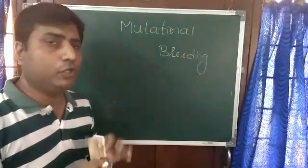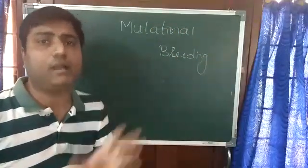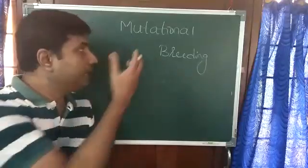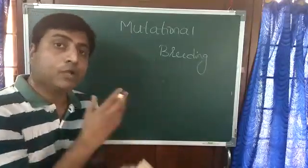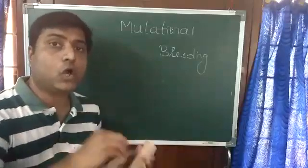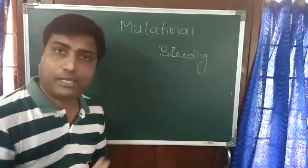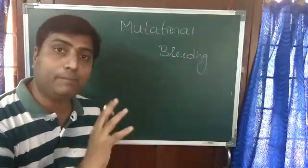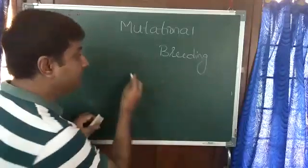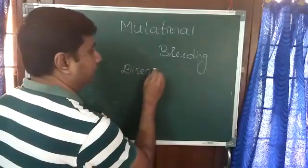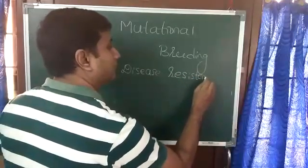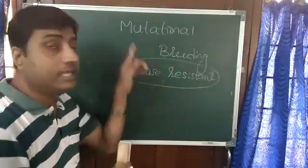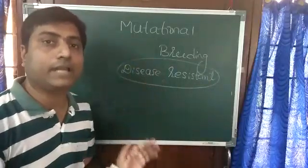In mutational breeding, mutation is a sudden change in the genetic makeup of an organism, possibly in a plant. We expose the plant or the gene to various mutation-causing agents, like certain chemicals or radiation such as gamma rays. These alter the base sequence or DNA pattern inside the plant, and the plant may become disease resistant.